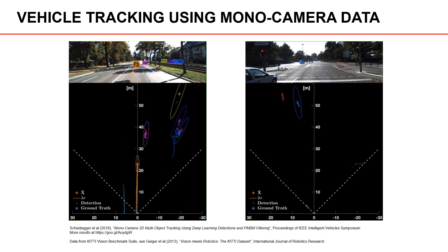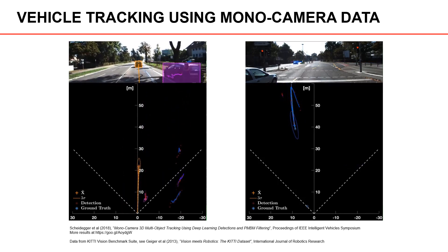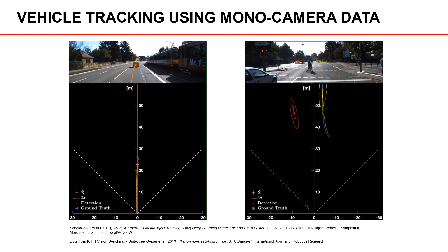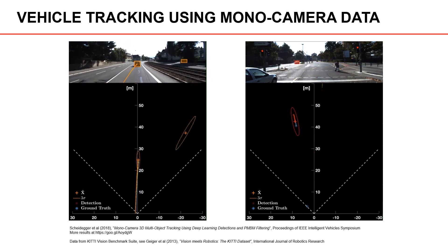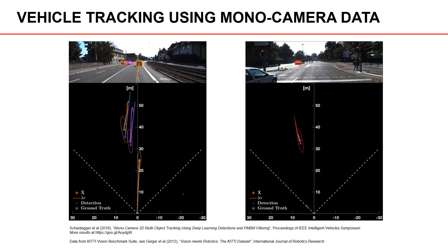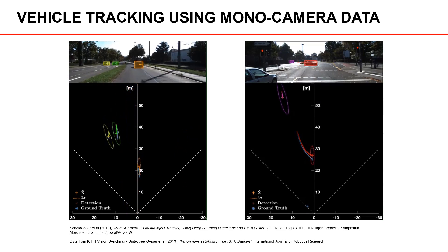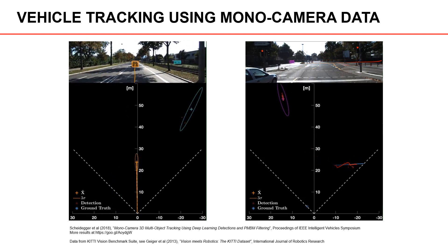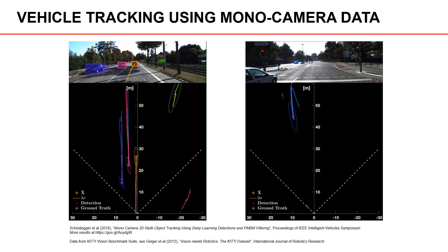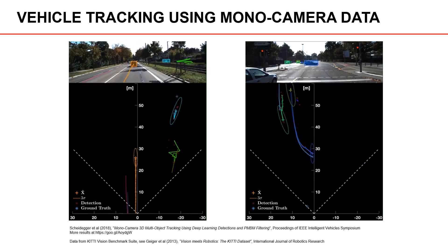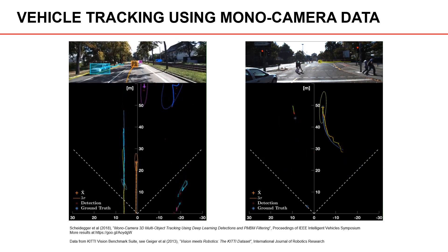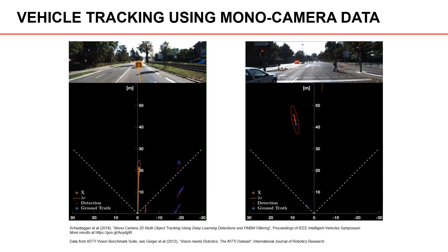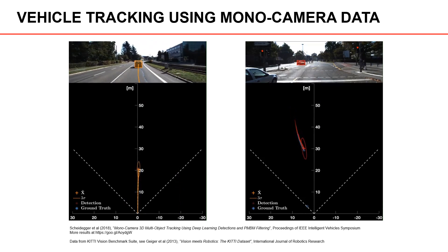In this example, we can see video data from two different sequences that were recorded in urban environments. Vehicles have been detected and are shown as colored rectangles. This information is then fed into a multiple object tracking system that outputs estimates of the vehicles' positions and velocities. From a top-down perspective, or bird's-eye view, we can see the field of view of the camera marked by the dashed lines. The tracked objects' positions are visualized by the colored plus signs, and the ellipses show covariance matrices.